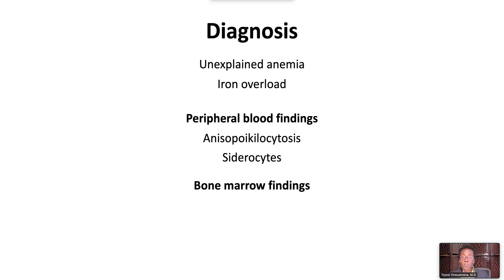Bone marrow findings include erythroid hyperplasia, and the marrow Prussian blue stain shows ring sideroblasts.